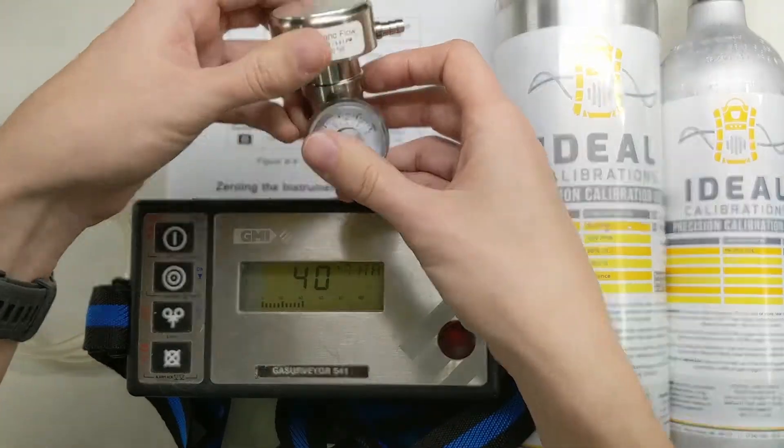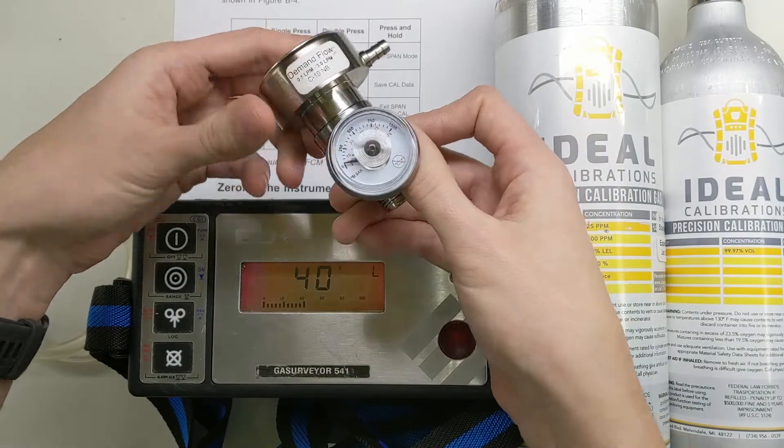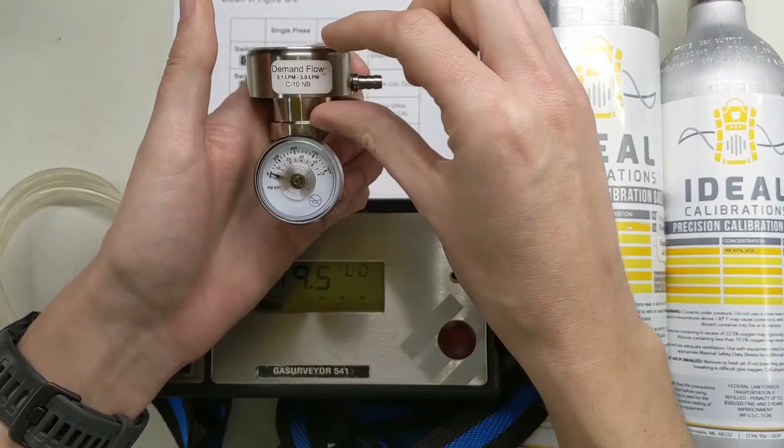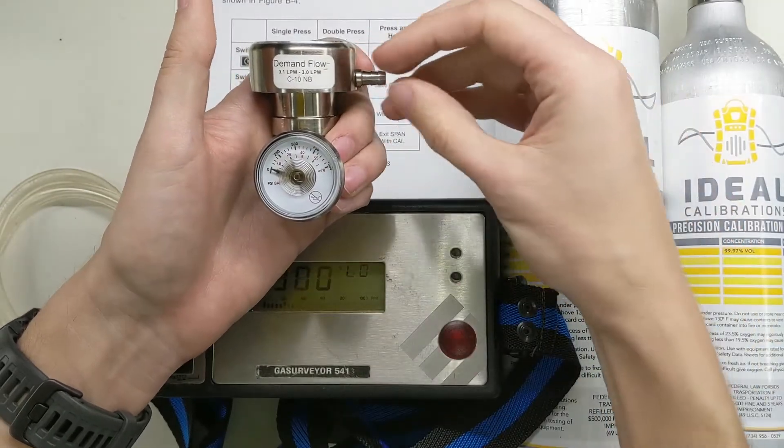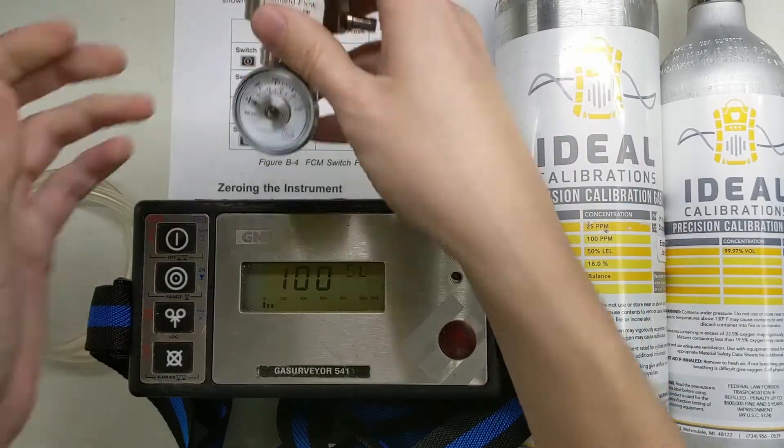It's going to go through its alarm limits. And during startup let's grab our other equipment. We have a demand flow regulator. So this is a regulator with no on-off knob. And what it does is when it senses a vacuum on this end, it delivers gas.